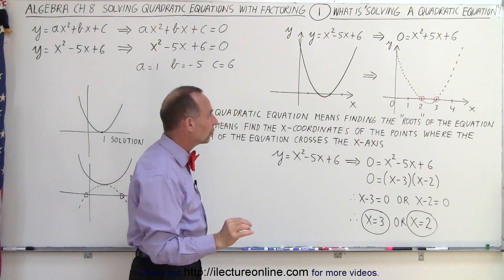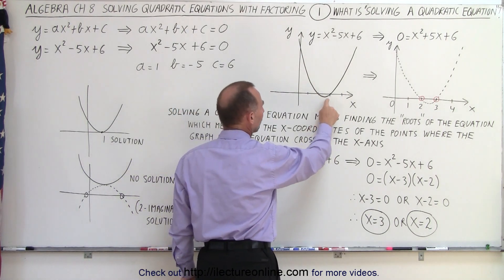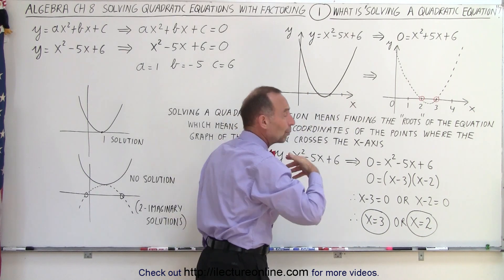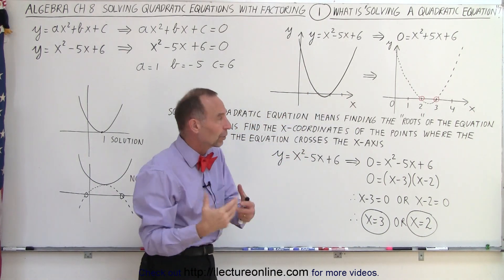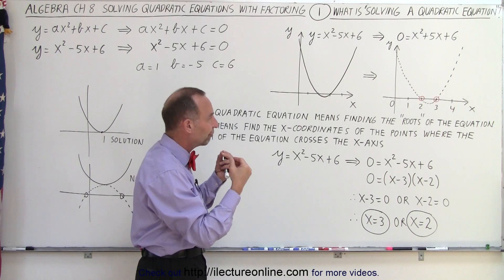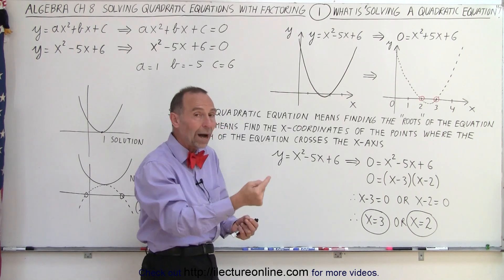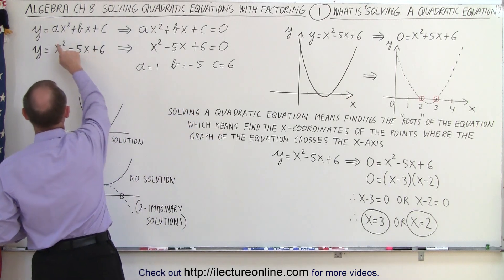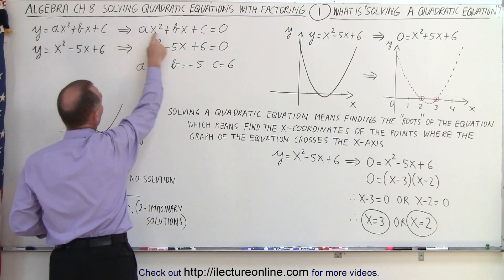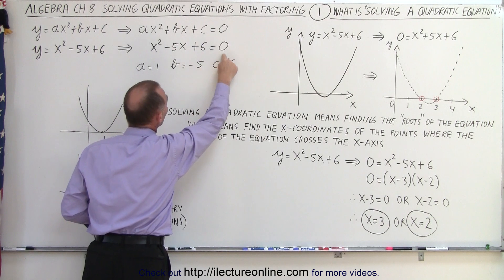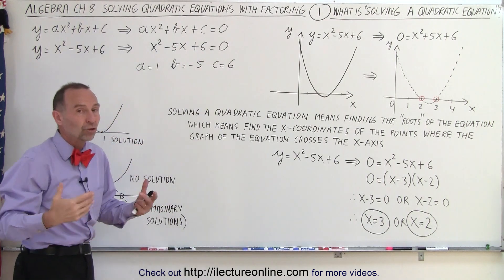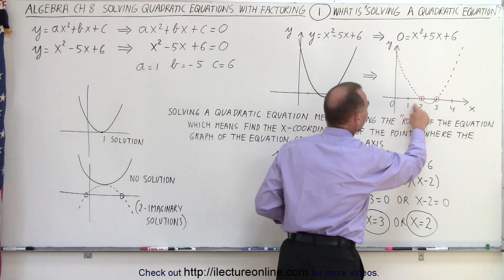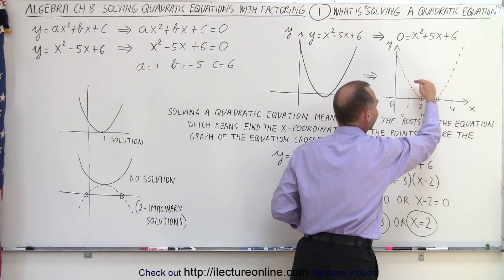And for some of those values, y will be equal to 0. When x is a particular value, y will be 0. And so when we say that we're solving a quadratic equation, we're looking for the variables of x that makes y equal to 0. And to find those, we can use the technique where we set the y equal to 0 and then we solve this equation. That's what we mean by solving the quadratic equation. We solve for the variables where the function crosses the x-axis.